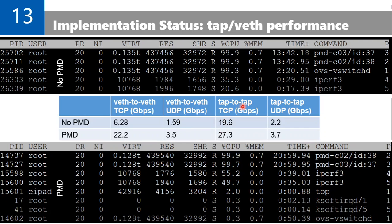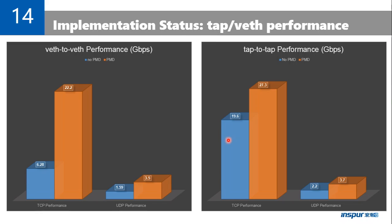For TAP-to-TAP performance, it's much better. Even for this case, if we use PMD threads, we can still get much better performance. The column charts clearly show this — it's very noticeable.